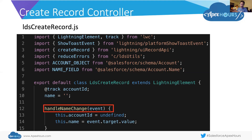We see accountId is @tracked. Then we see our first method — handleNameChange, called by our onChange event. We're capturing the event that caused it to fire. We're going to reset our accountId, which is why it went away when I started typing in that box again. And we're going to set the name to whatever was typed in — the value of the thing that fired the event gets assigned to name, the accountId gets reset. That's all handleNameChange does.